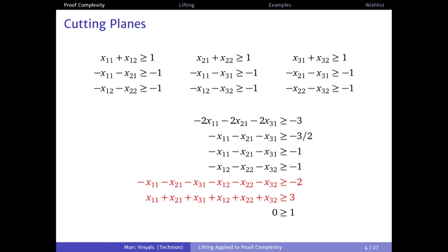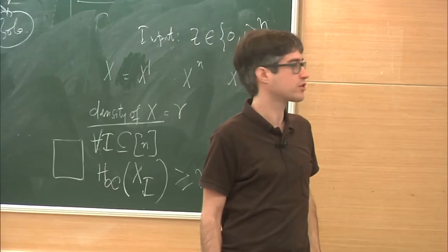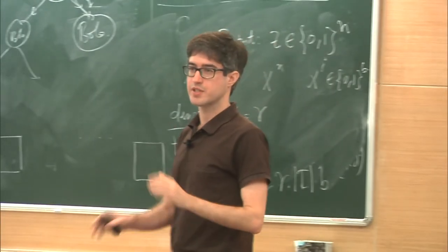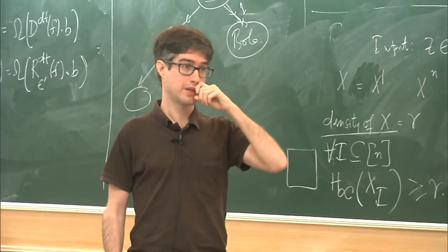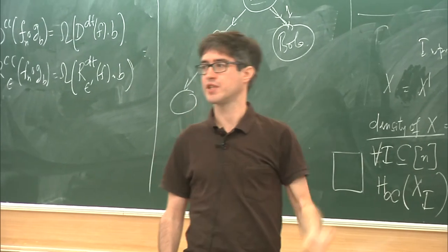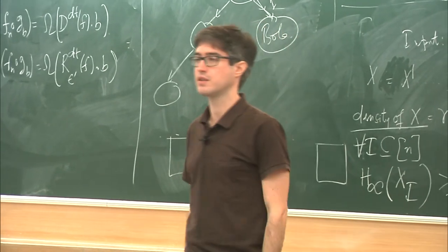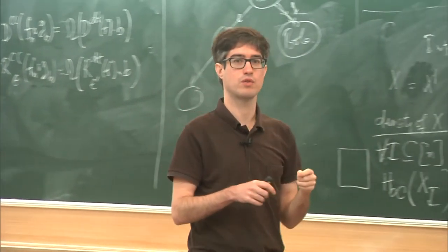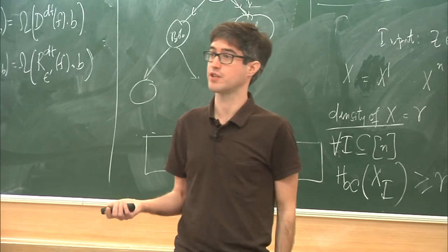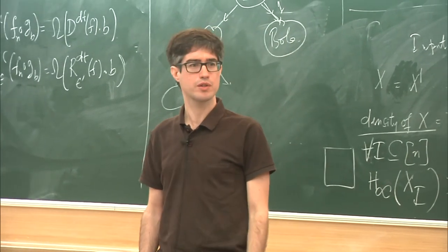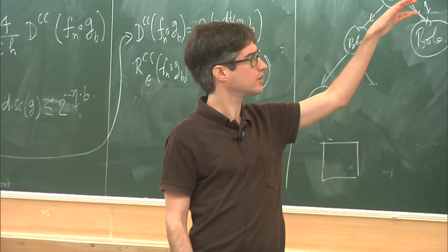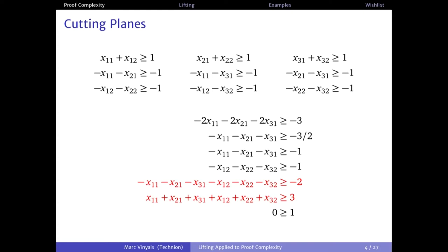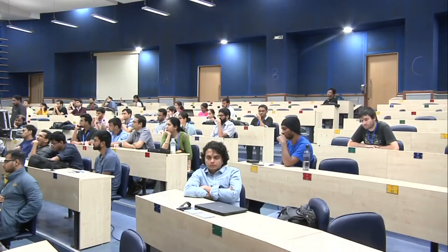This is really much shorter than what we could do with resolution — and this was just six variables. With N variables, you can do this in polynomial time with cutting planes, but resolution would need exponential length. So this is what proof complexity is about: looking at formulas and finding the shortest proof using different sets of rules. We care more about which objects we're reasoning with than the exact rules.